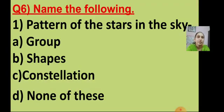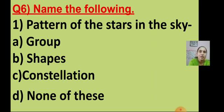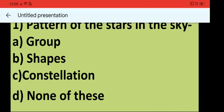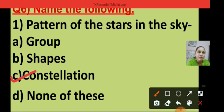Now name the following. Question number 1: pattern of the stars in the sky. The options are group, shapes, constellation and none of these. The pattern of the stars in the sky is called constellation, so I am putting a tick on constellation. Children, be ready with your answer before I tell the answer.